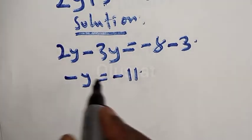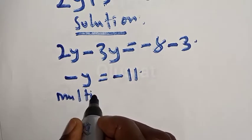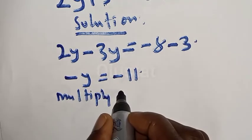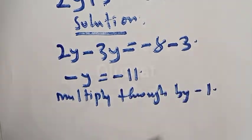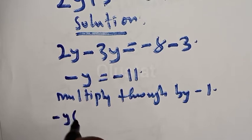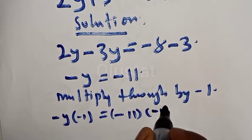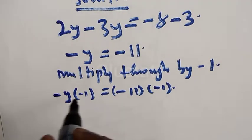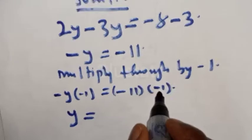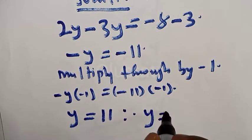Then we multiply through by minus 1 in order to cancel the negative. This implies that minus 1 times minus y equals minus 11 times minus 1. Therefore, y will be equal to minus 11 times minus 1, which is 11. Therefore, y is equal to 11.